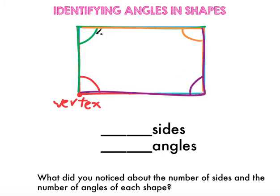So that rectangle, how many sides did we find? Let's count. One, two, three, four. So we have four sides. And how many angles did we draw? One, two, three, four angles. We also have four angles. Four sides, four angles.